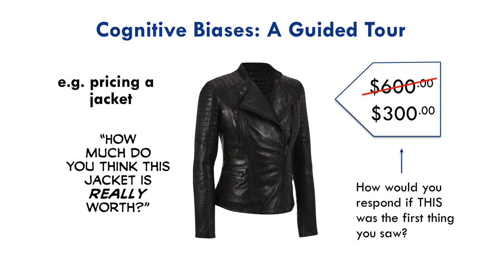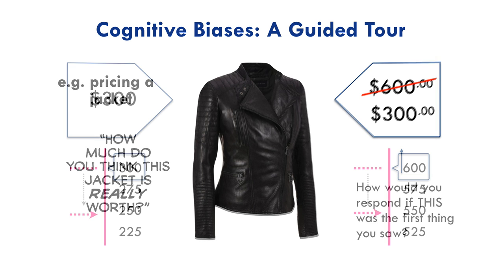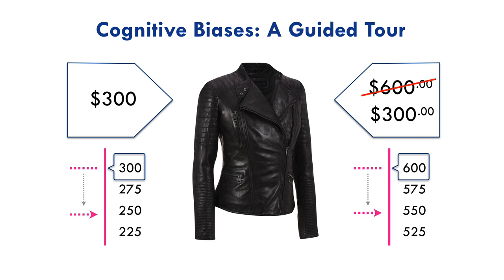You figure it's not worth $600, so you revise downward. But how far down? When you perform this experiment, these are the typical answers you get. For the $300 price tag, people anchor to $300 and revise downwards, heading somewhere between $200 and $300 usually. For the $600 price tag discounted to $300, people anchor to the $600 and revise downwards, ending somewhere between $500 and $600.